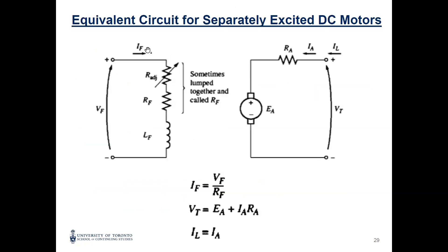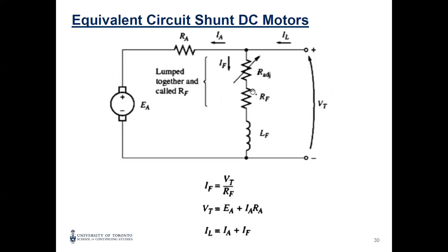For the separately excited configuration, the field current and field voltage are separate from the armature. For the shunt configuration, the field is placed in parallel with the armature. With shunt, you have one source. This is the most common — over 90% of PO exam questions involve shunt DC motors, so this is most likely what you will see in the exam.